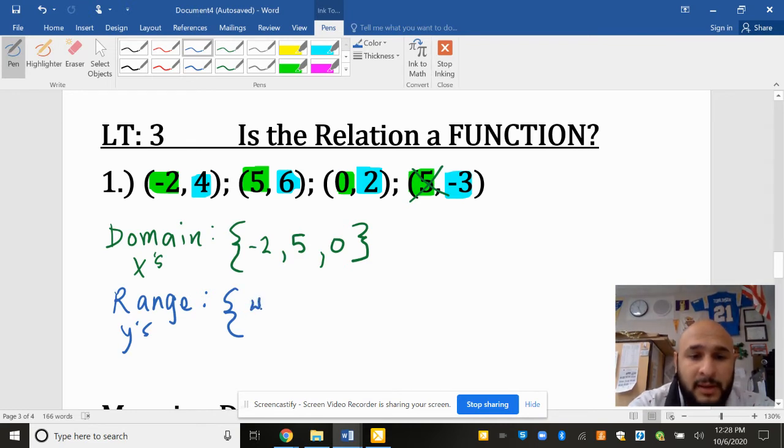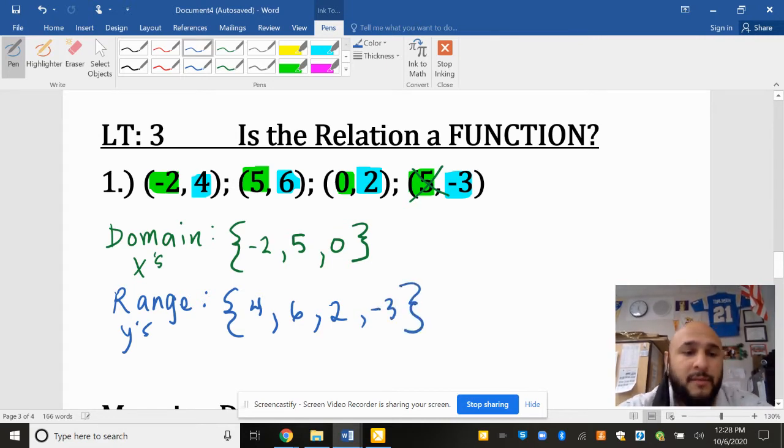None of those repeats, so we will have to list all of these: 4, 6, 2, and negative 3. Those are all a part of our range.